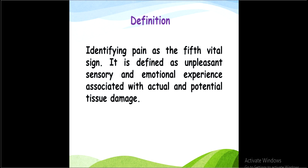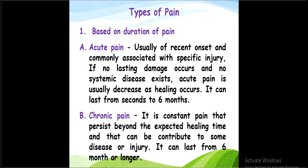The first classification is based on the duration of pain. The first type is acute pain — usually of recent onset and commonly associated with a specific injury. If no lasting damage occurs and no systemic disease exists, acute pain usually decreases as healing occurs. It can last from seconds to six months.